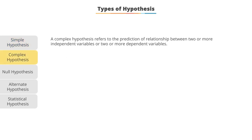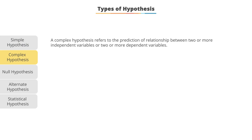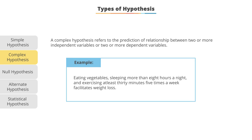Now a complex hypothesis could refer to the prediction of relationships between two or more independence or two or more dependent variables. So instead of eating vegetables causes weight loss, eating vegetables and sleeping more than eight hours a night...